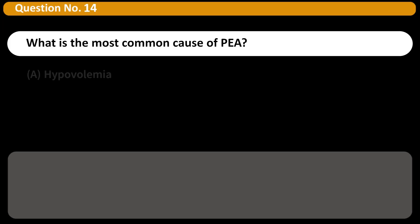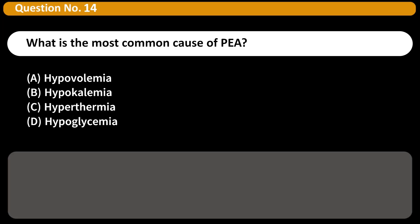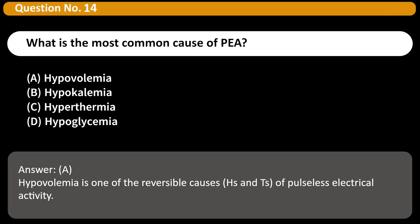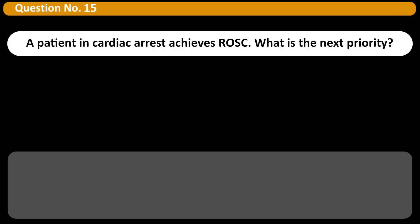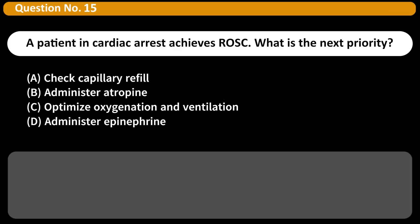What is the most common cause of PEA? A. Hypovolemia. B. Hypokalemia. C. Hyperthermia. D. Hypoglycemia. Answer: A. Hypovolemia is one of the reversible causes — the H's and T's — of pulseless electrical activity.